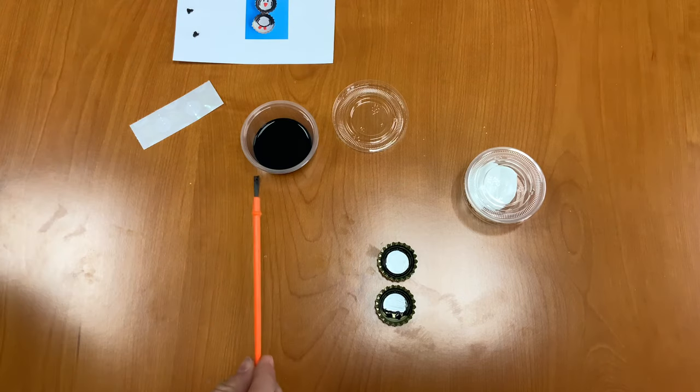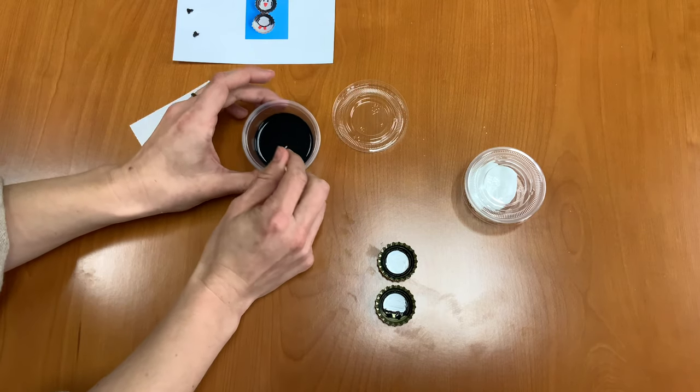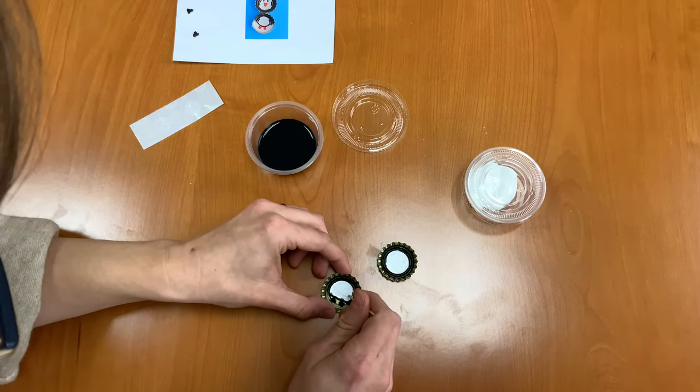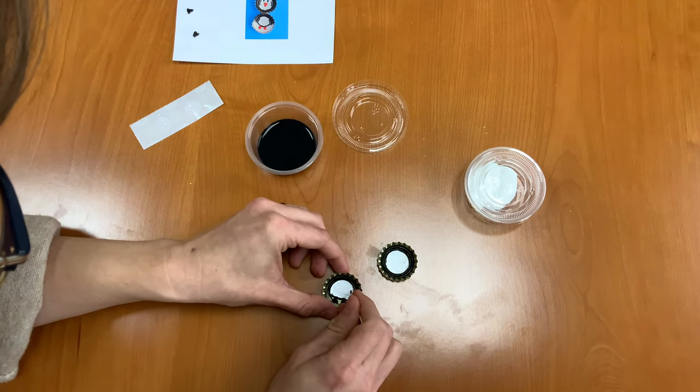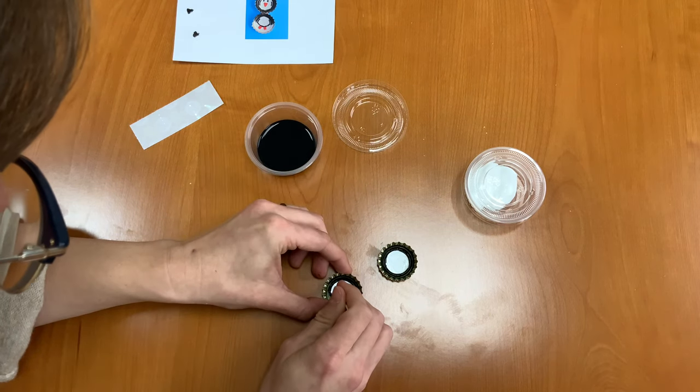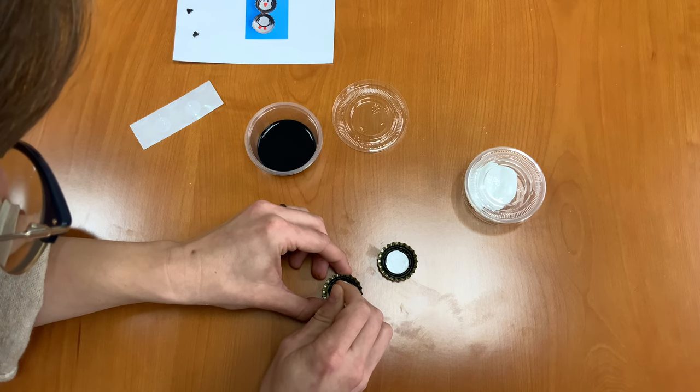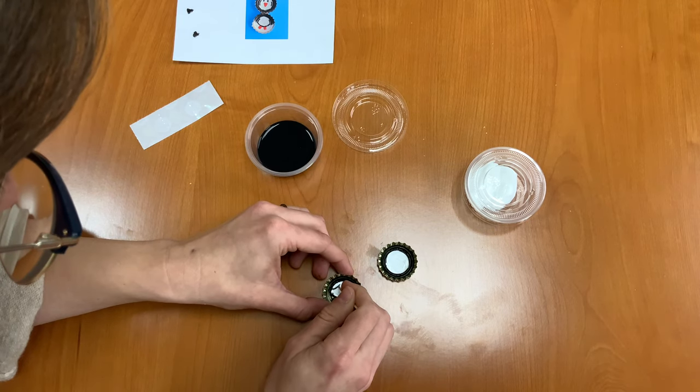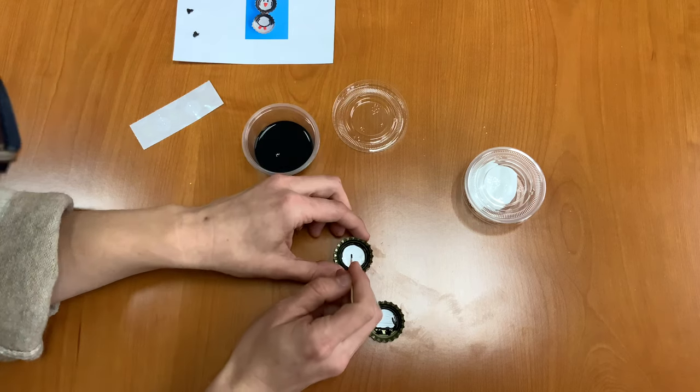And next I'm going to trade my paintbrush for a toothpick. And I'm going to dip that in the black and I'm going to draw little arms. And I'm going to draw my penguin's face.